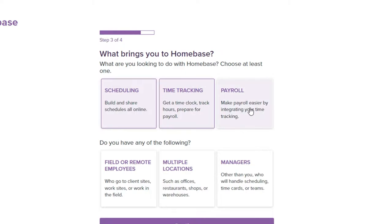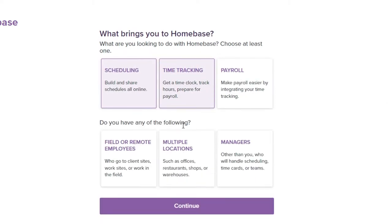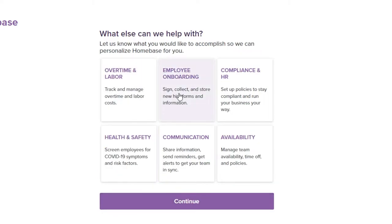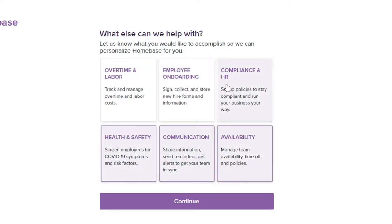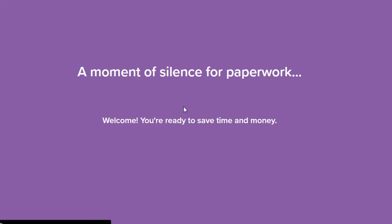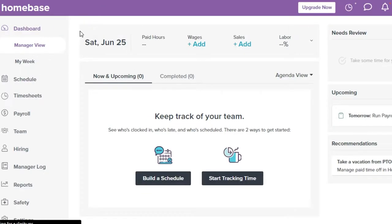Next, you'll see 'What brings you to Home Base?' I'll select scheduling, time tracking, and payroll. We can also include field employees and managers. Click Continue, and you can select additional features like health and safety, communication, availability, and HR. Click Continue and it will take a few seconds to set up your Home Base account.